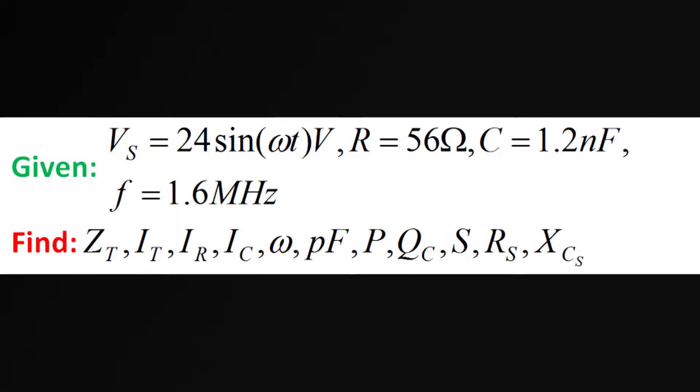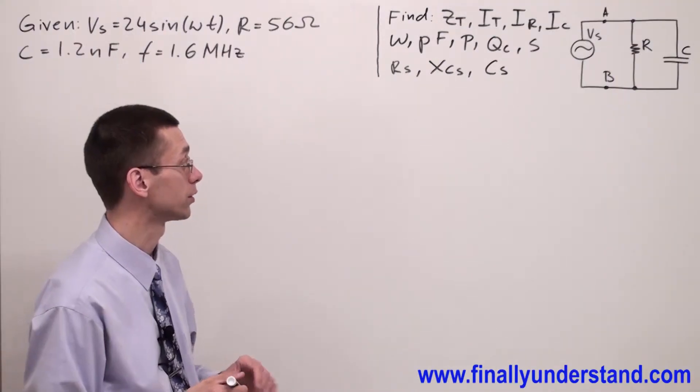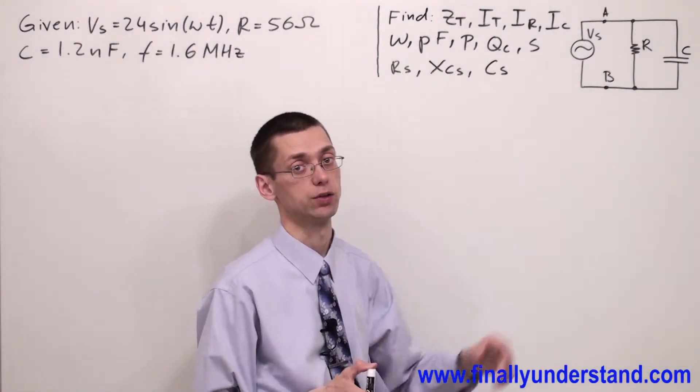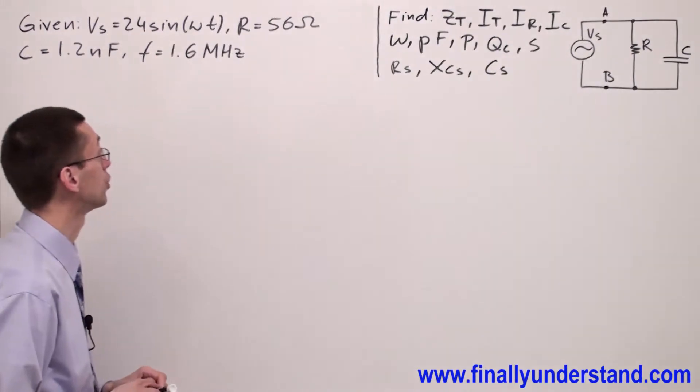Let's take a look at this example. We're going to discuss a parallel circuit with two components connected together: a resistor and capacitor. First, we're supposed to find Z total.